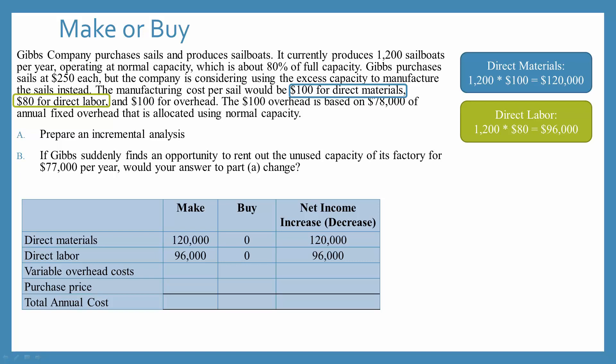Now we can see on both the materials and the labor, if we make the products, we have those costs. If we choose to buy, we don't have to pay direct materials or direct labor. So when we're comparing make to buy, that decrease in costs causes an increase in net income for both of those items.